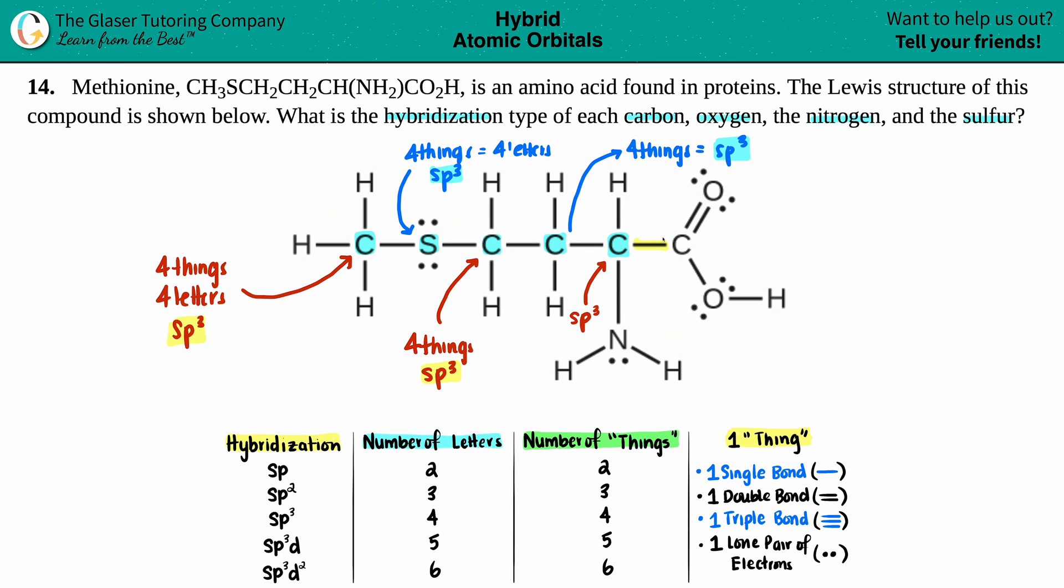Next. Doesn't matter where we go from here. Let's just finish out the carbons. Now we're going to look at this carbon. It's got a single bond, that's one thing. It's got another single bond here, that's two things. But now I see that I have a double bond. One double bond is one thing. So I only have three things over here. No lone pairs. Three things, three letters. This carbon is SP2 hybridized. Oh, that's different.